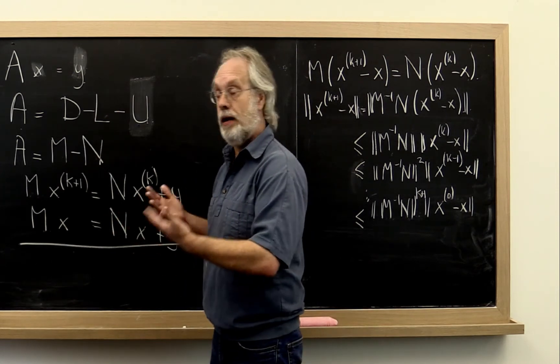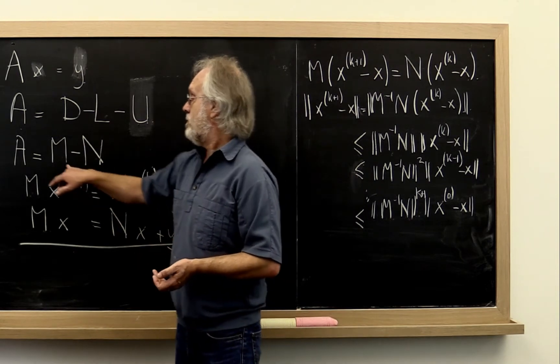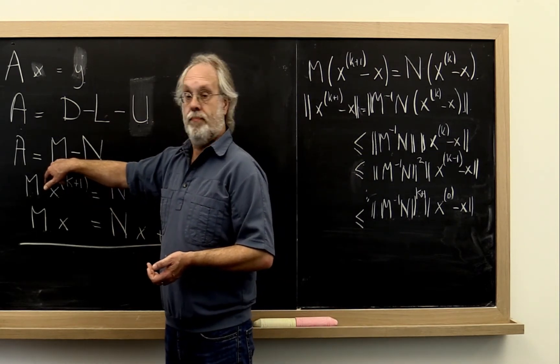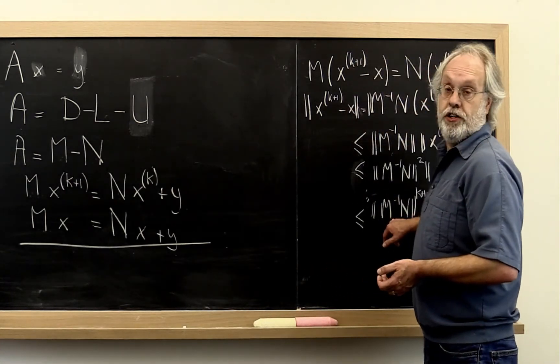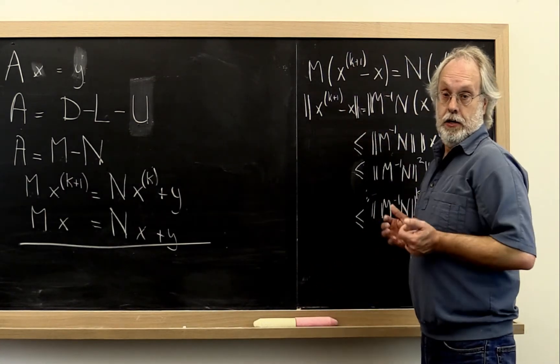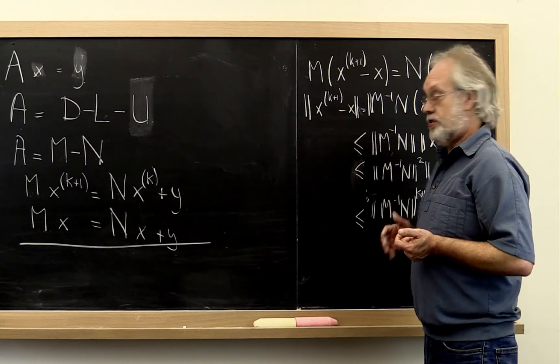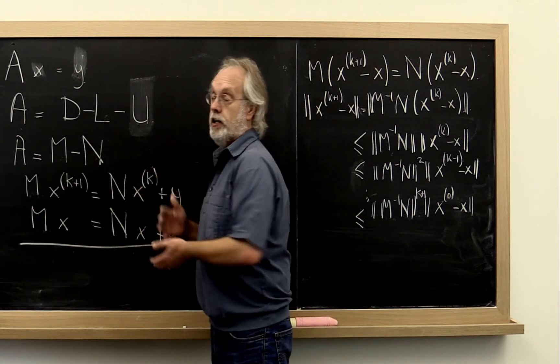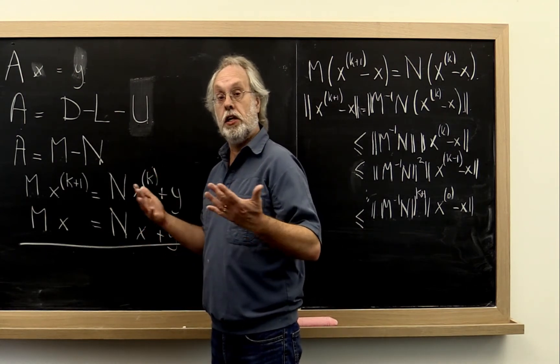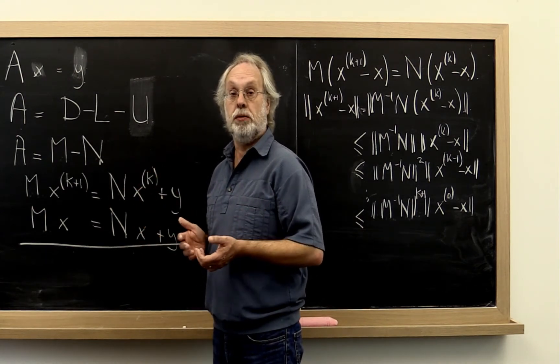So there's this delicate balance between picking an M and N such that this coefficient that tells us how fast the iteration converges is small and making sure that you can conveniently do the computation, conveniently meaning cheaply.